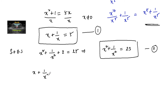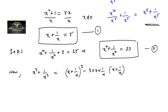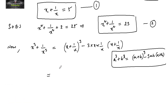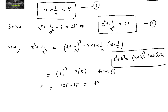Now we use the formula a cubed plus b cubed equals (a plus b) whole cubed minus 3ab(a plus b) to find x cubed plus 1 upon x cubed. So x cubed plus 1 upon x cubed equals (x plus 1/x) cubed minus 3 times x times (1/x) times (x plus 1/x), which is 5 cubed minus 3 times 5, giving 125 minus 15 equals 110. So x cubed plus 1 upon x cubed equals 110. Let this be equation 3.